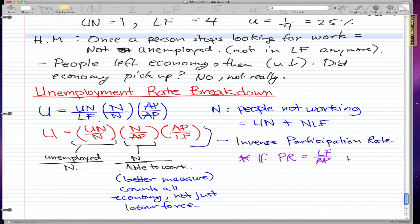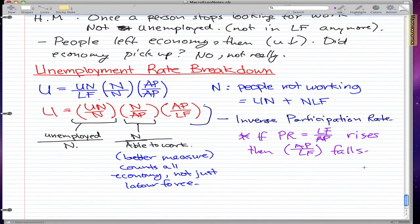if it rises, then our inverse participation rate, AP over LF, falls. And this makes sense or else it wouldn't be called an inverse. And if the other two factors, this and that,